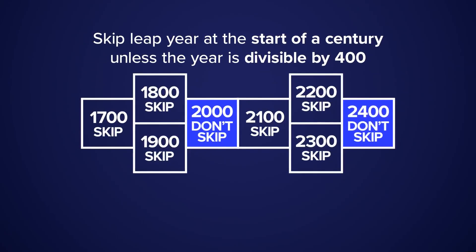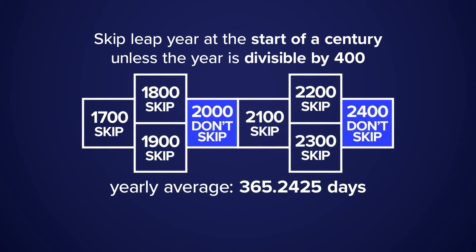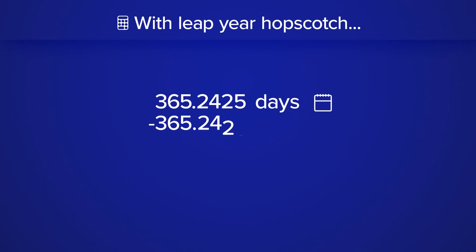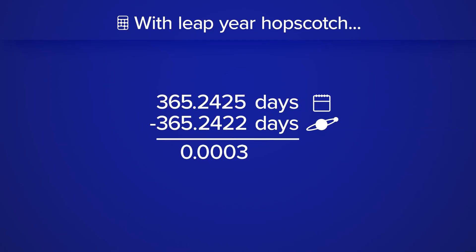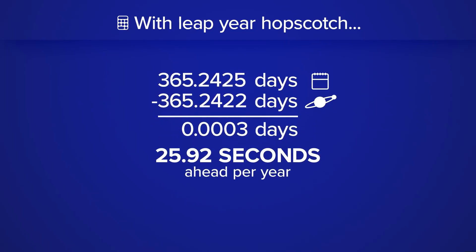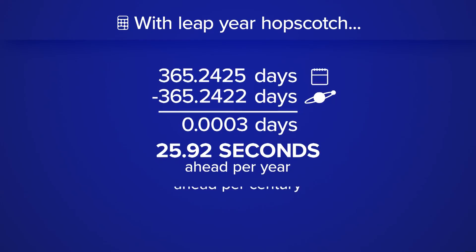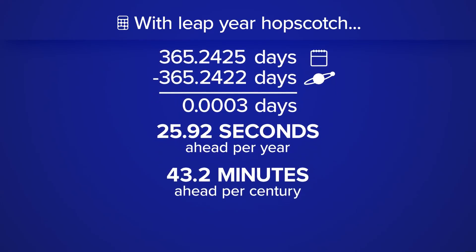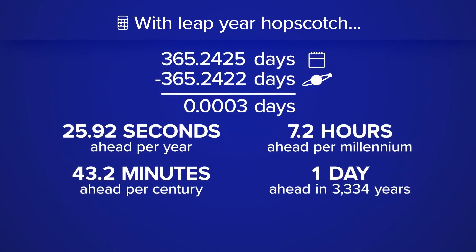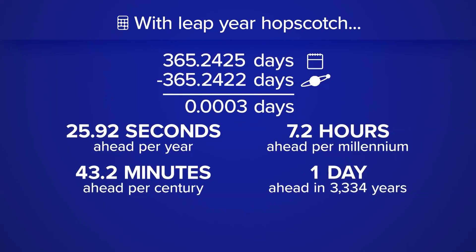With this added solution, the current average is 365.2425, which is a lot closer to the solar year. But unfortunately, we are still off by decimals — to be exact, about 26 seconds ahead each year. At this rate, it would take over 3,000 years to be off by one day, which some would say is close enough.